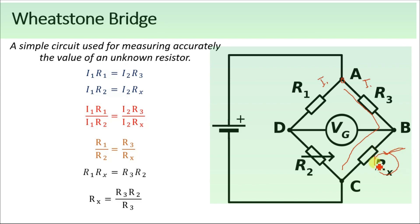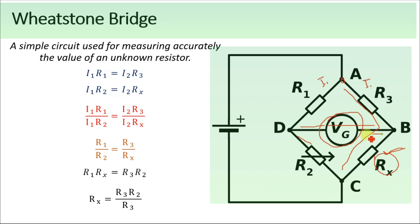To calculate the value of the unknown resistor, we will change the value of the variable resistor — we may increase or decrease it. When the value of the variable resistor becomes equal to the unknown resistor Rx, the galvanometer will show zero flow of electric current. This point is known as the null point. At the null point, points D and B will be at the same potential, so current will flow through R2 and Rx only.